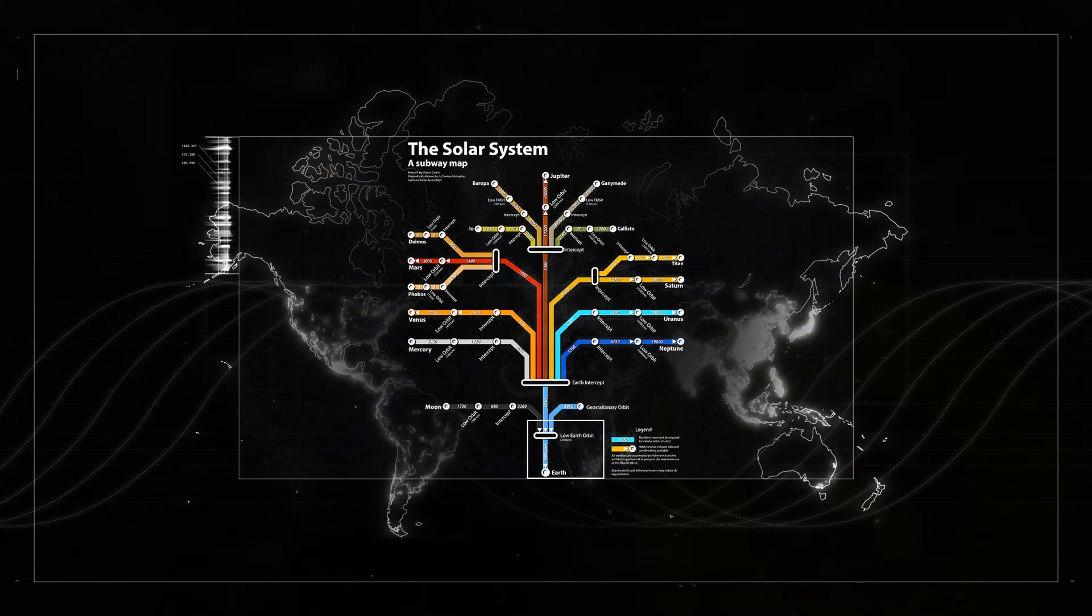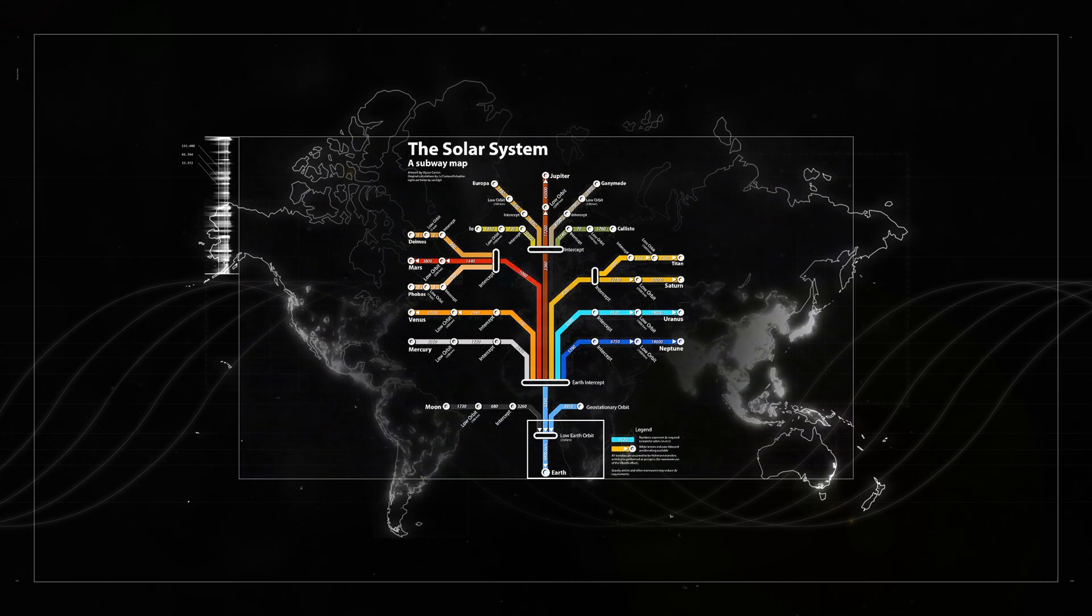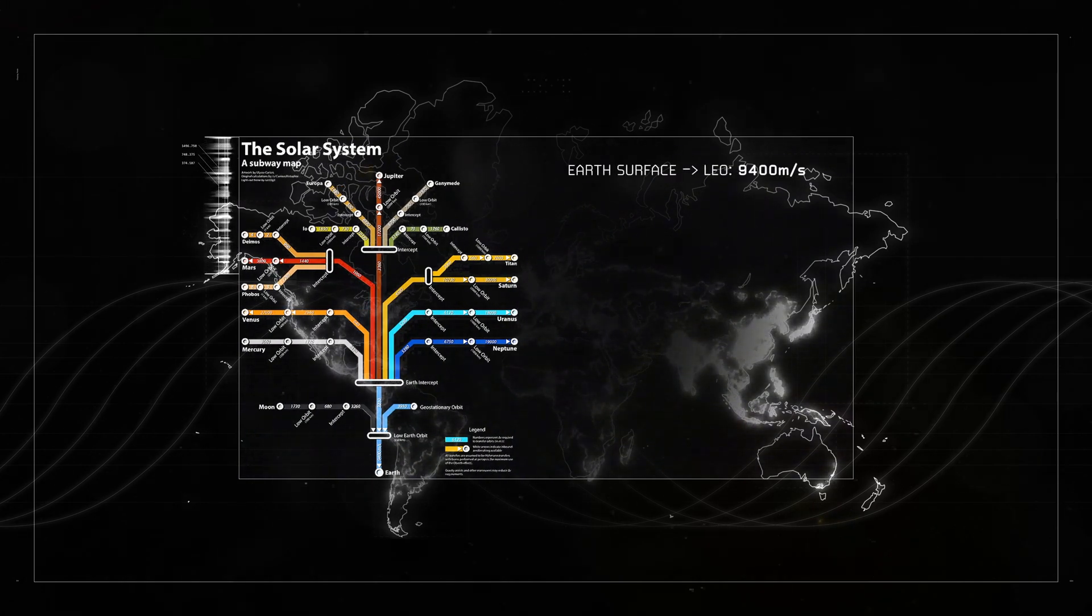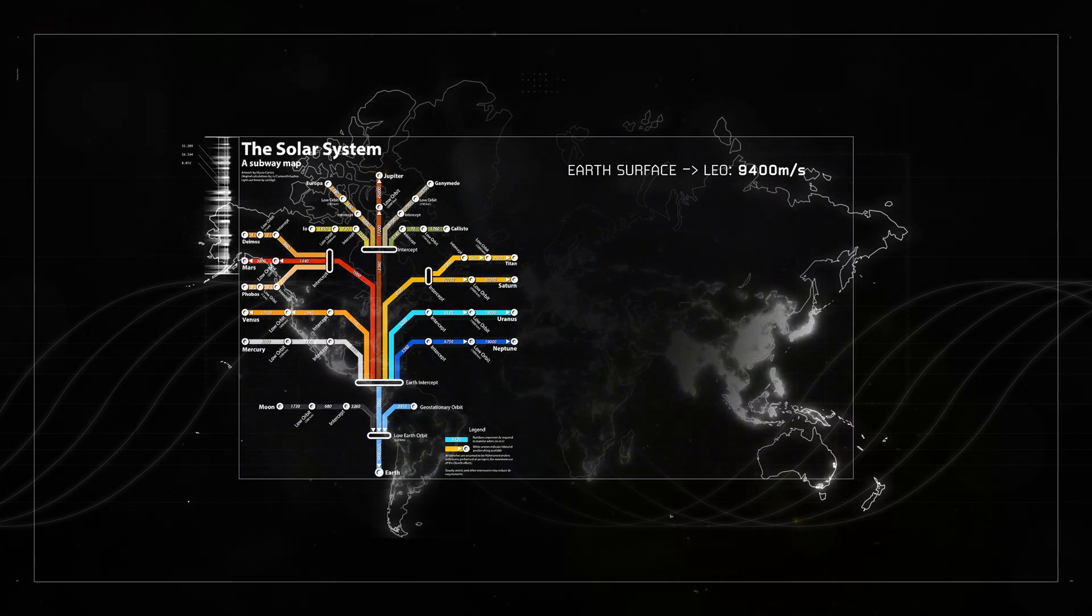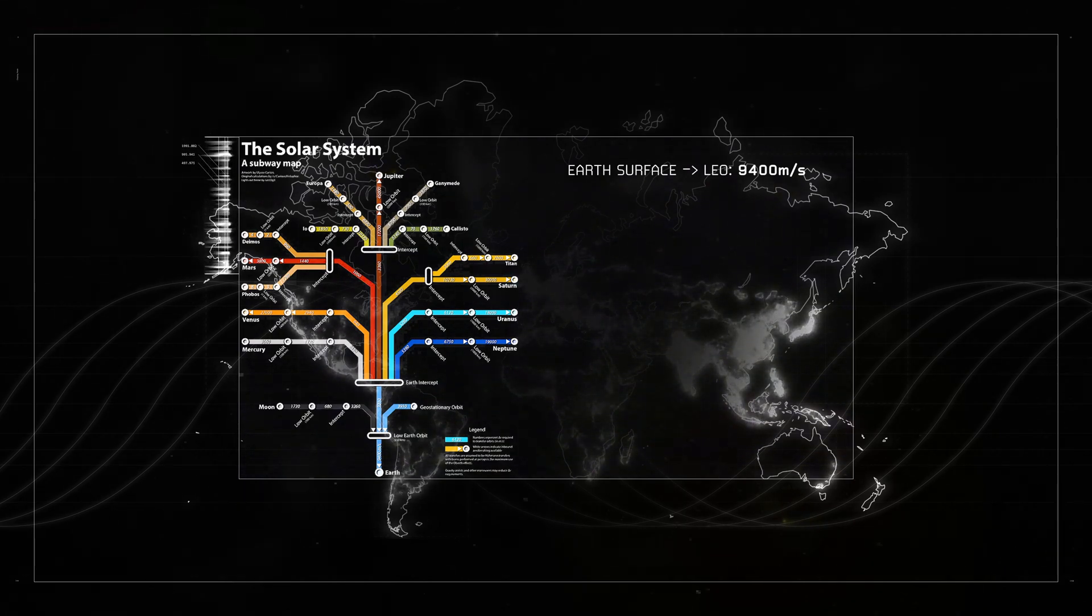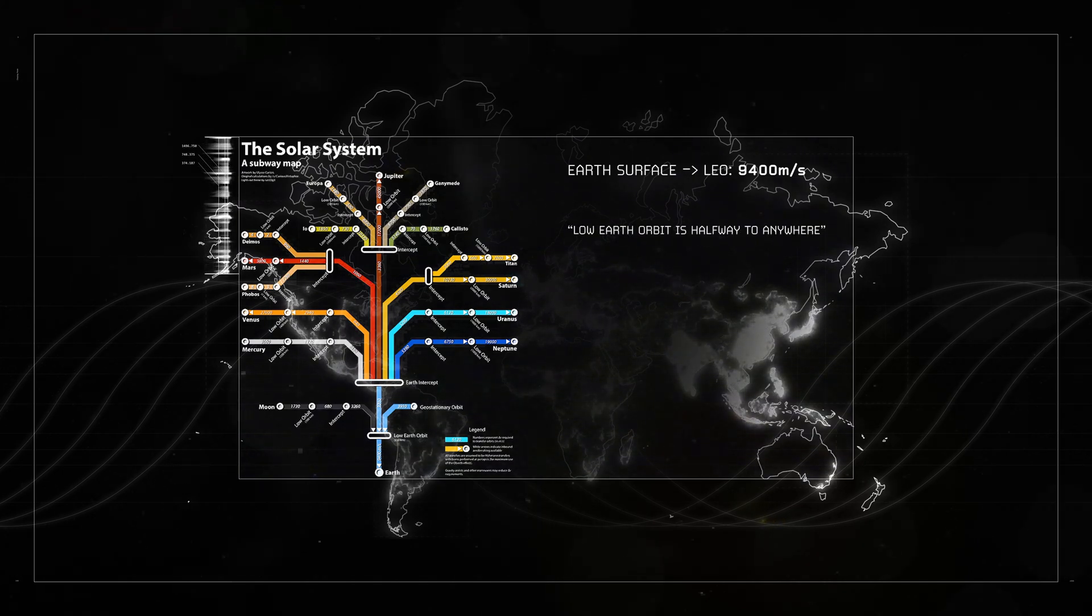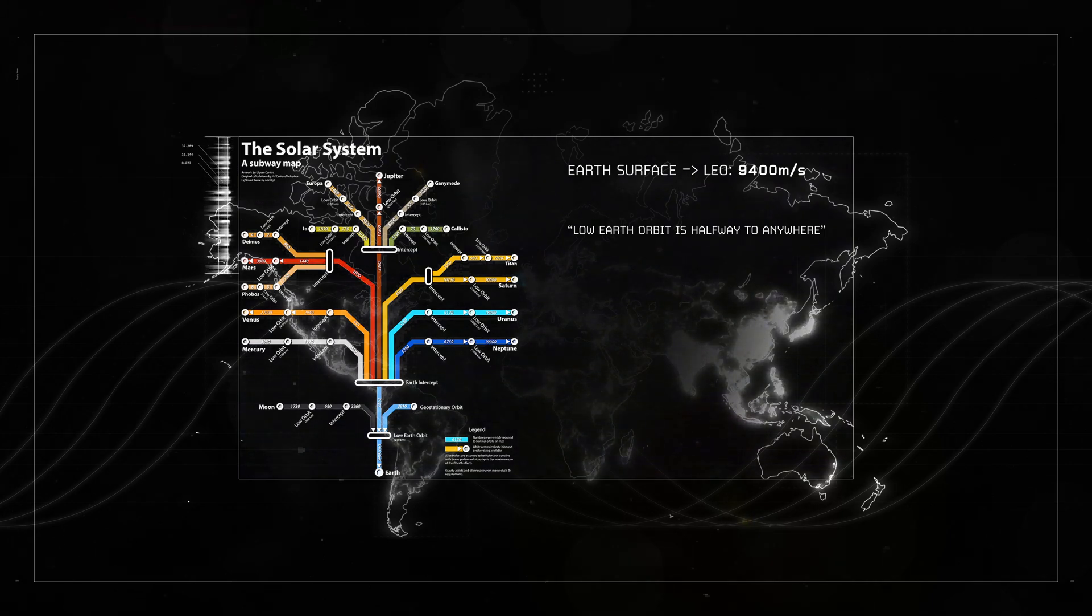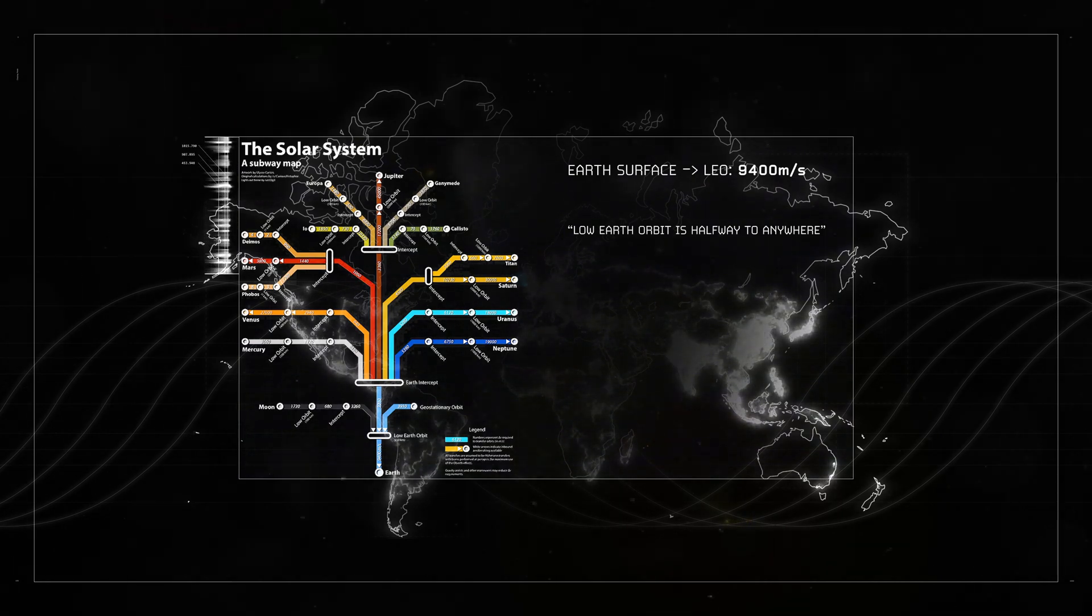You can also save some delta v by integrating some of these maneuvers into one maneuver where possible. So basically the values that you see on this map are potentially a little bit artificially inflated, we'll just try and take account of it. Anyways, to go from the surface of the earth to low earth orbit we'll need about 9,400 meters per second of delta v.